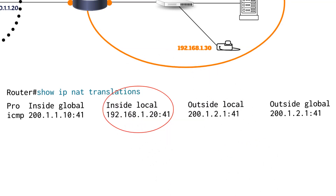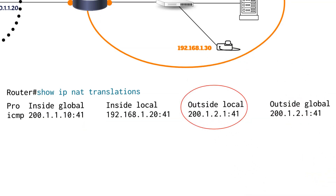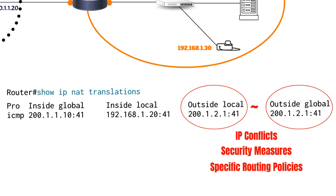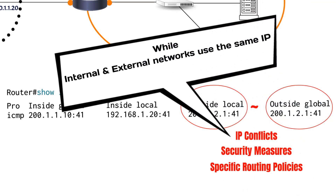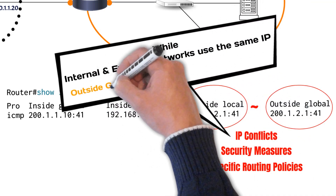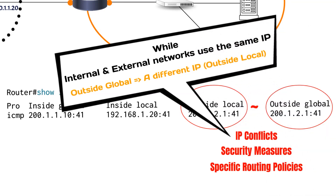The inside local address is the original private IP address of the device inside the network. The inside global address is the translated public IP address that represents the internal device on the external network. The outside local address is the address of the external destination from the perspective of the internal network. Usually it's the same as the outside global address, which is the real public IP address of the external destination, but can differ in cases of IP conflicts, security measures, or specific routing policies. IP conflicts occur when internal and external networks use the same IP address range. NAT can resolve these conflicts by translating the outside global IP to a different outside local IP for internal use, ensuring there is no overlap.